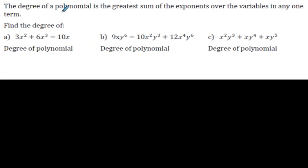Now, we know the degree of a monomial. What about the degree of a polynomial, when there's beyond just a monomial? So it's the greatest sum of the exponents over the variables in any one term. Now that is confusing. Let's just do it, and it will make more sense.